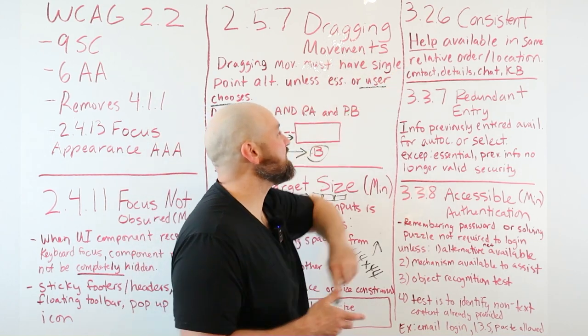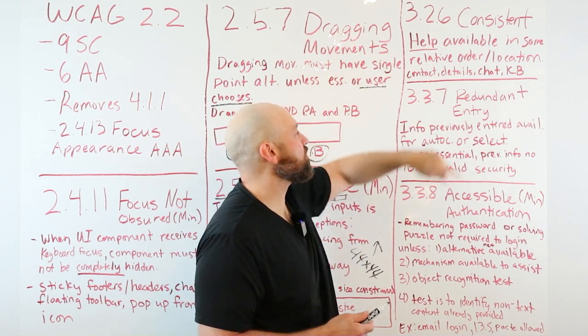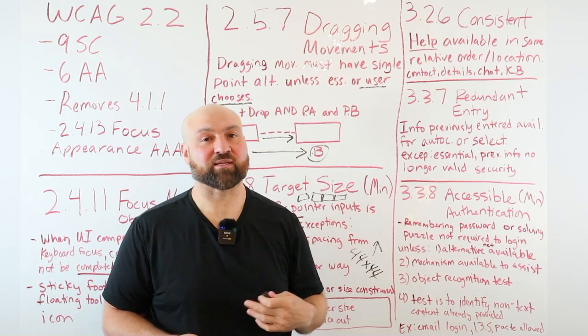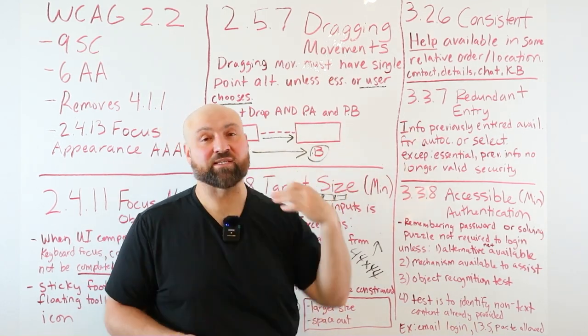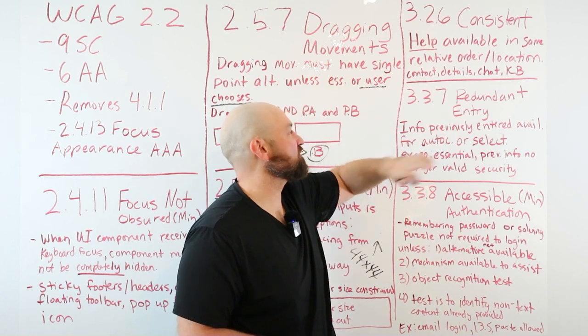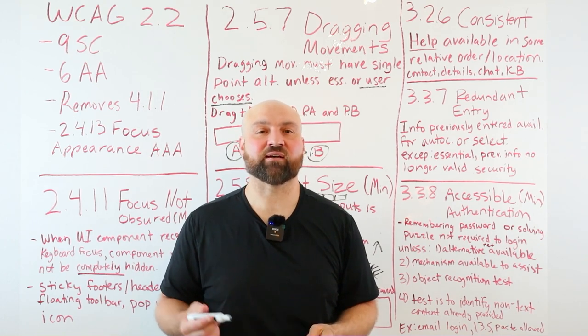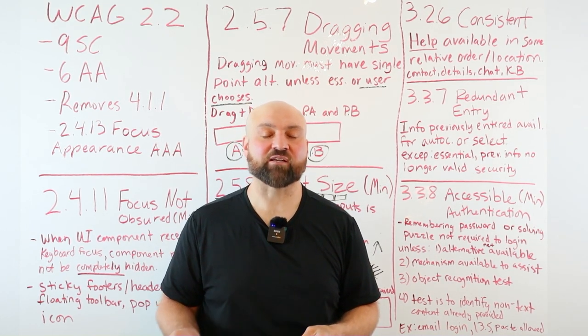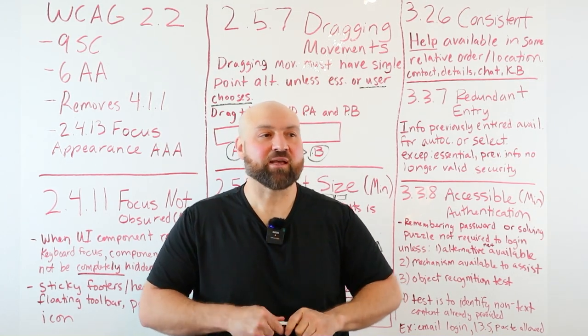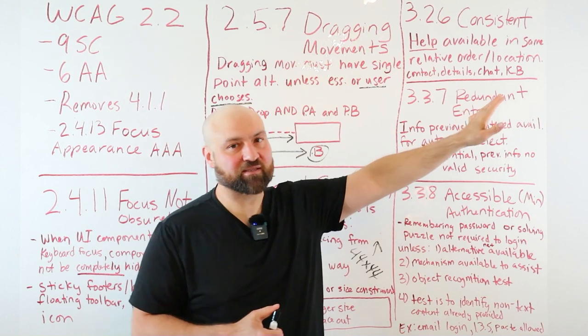3.2.6 is an easy one. We make sure there is consistent help. Help is available in the same relative order and location. What is help? It could be a contact page, contact button, contact form, contact details where we're listing our address, phone number, email. It could be the chat box, knowledge base, frequently asked questions, whatever it is. If you have help, just make sure it's consistently available in the same relative location and order on your website throughout your website.